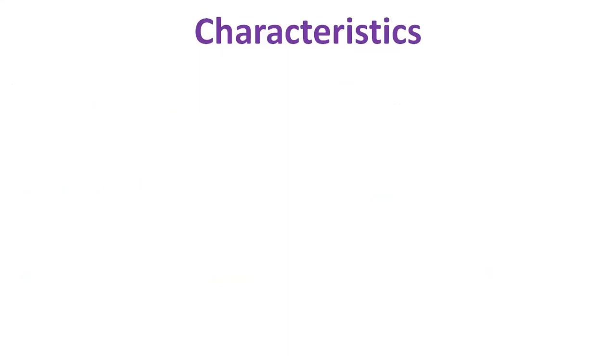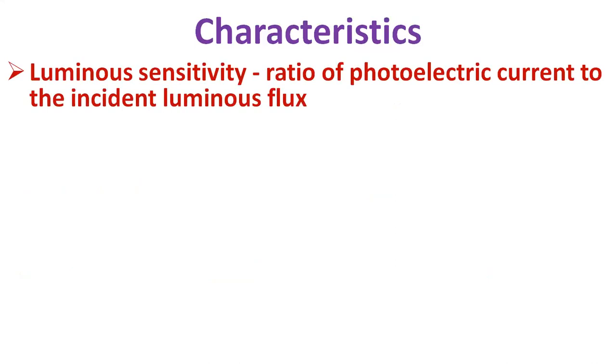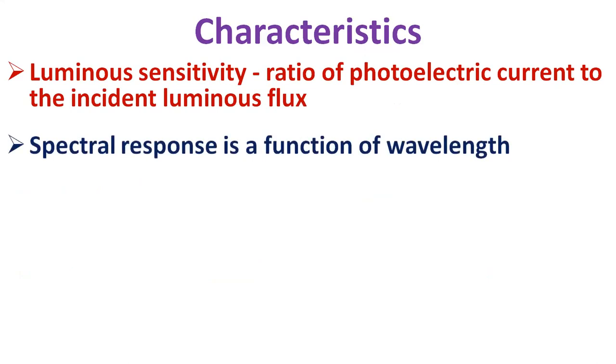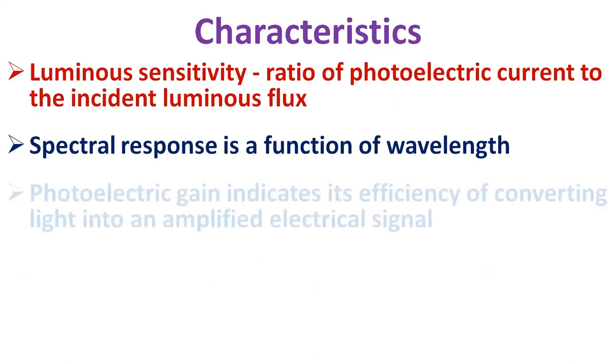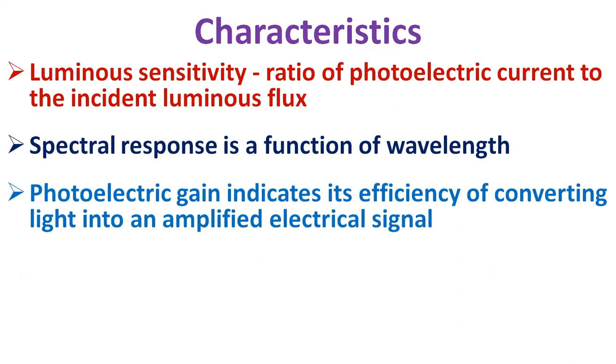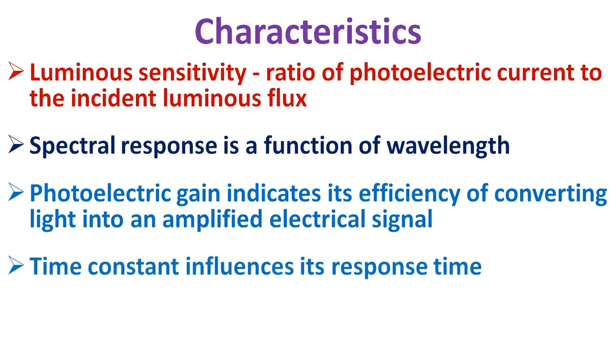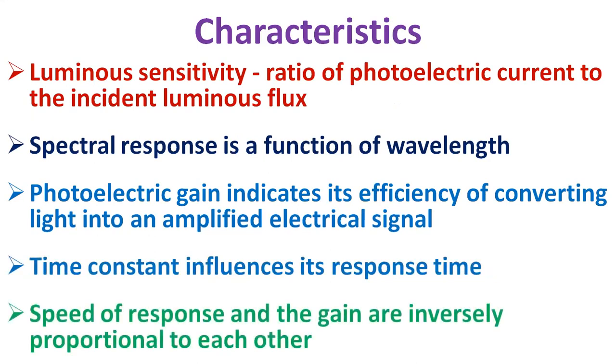Further, the characteristics of a particular phototransistor can be expressed in terms of its luminous sensitivity, defined as the ratio of photoelectric current to the incident luminous flux. Then the spectral response, which decides the longest wavelength which can be used, as the sensitivity of the phototransistor is a function of wavelength. Photoelectric gain, which indicates its efficiency of converting light into an amplified electrical signal. Then the time constant, which influences its response time. However, it is important to note that the speed of response and the phototransistor gain are inversely proportional to each other, meaning one decreases if the other increases.